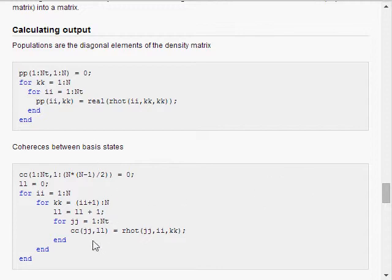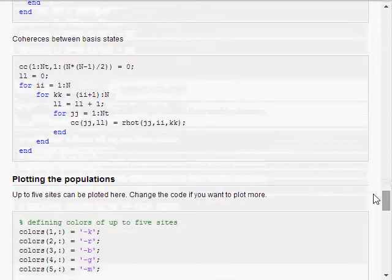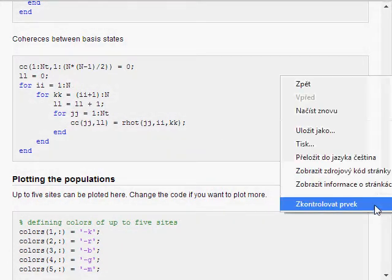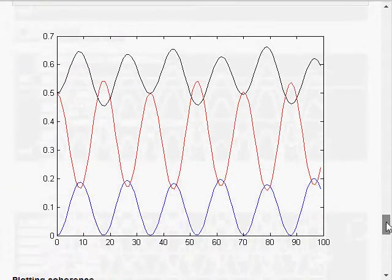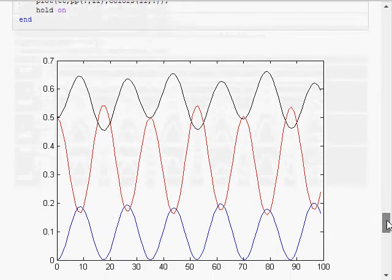So concerning the coherences, I just put the off-diagonal elements into the coherences. Here I kind of put them into one vector and here I'm plotting separately the populations.